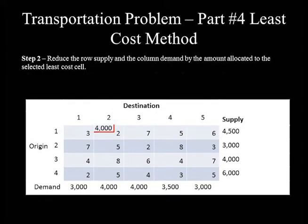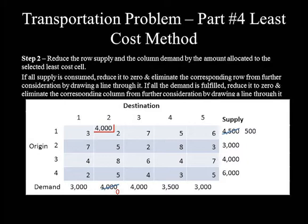Step 2: Reduce row supply and column demand by the allocated amount. Row supply for Origin 1 is 4,500 minus 4,000, which equals 500. Column demand for Destination 2 is 4,000 minus 4,000, which equals 0. Since Destination 2 demand is reduced to 0, column 2 is crossed out by drawing a line through it, and we continue to Step 3.